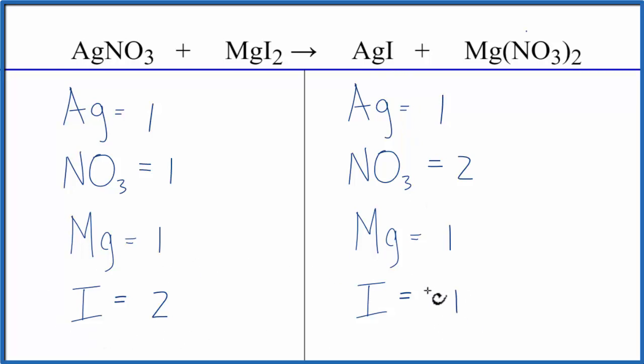Looks like we could fix the iodine atoms by putting a two in front of the AgI, the silver iodide. One times two, that'd give us two silvers, but the two applies to everything, so one times two. That gives us two iodine atoms, and those are balanced.